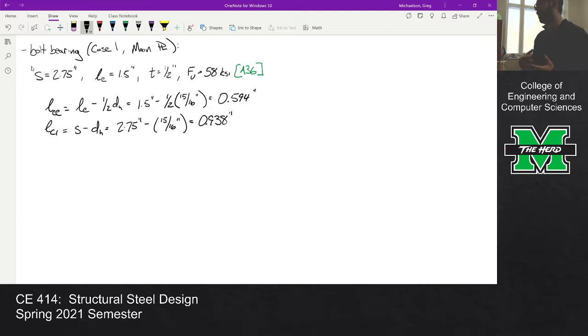Our capacity per bolt is the minimum of 1.2*Lc*t*Fu or 2.4*db*t*Fu. I'll go ahead and do those calculations off to the side, so 1.2*LCE*t*Fu, and because we have two different clear distances, we'll have 1.2*LCI*t*Fu and 2.4*db*t*Fu.